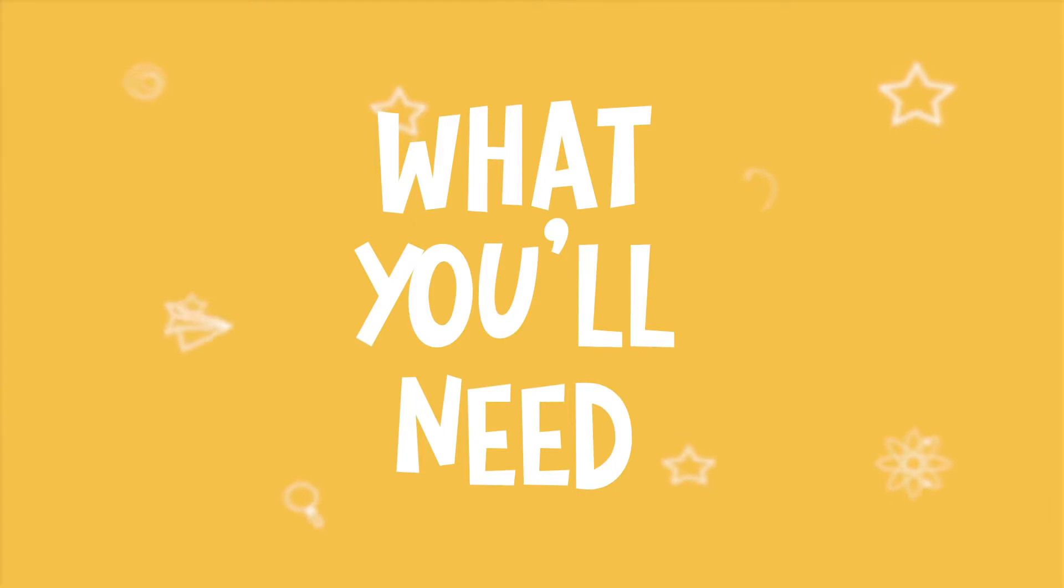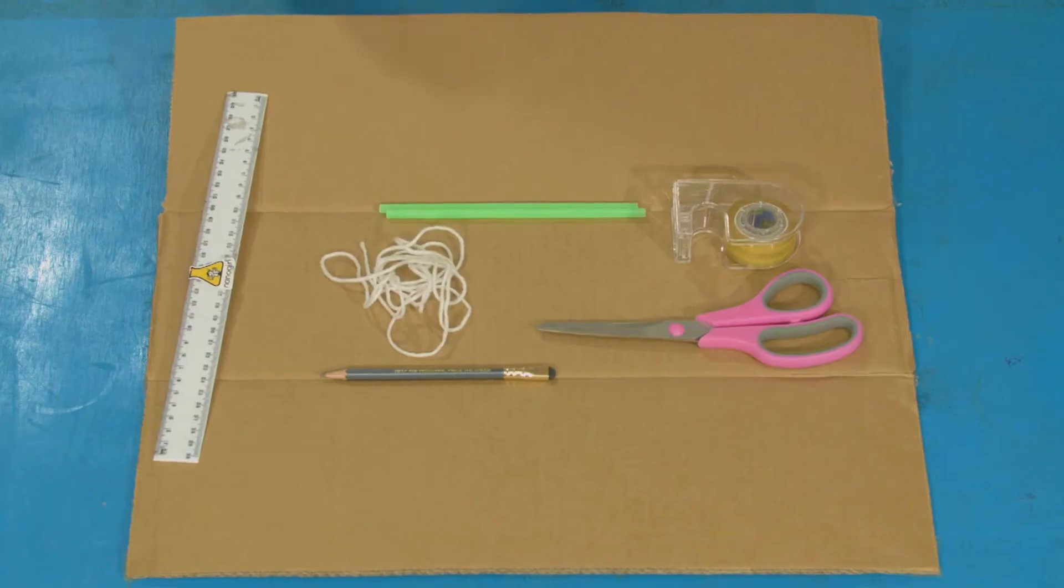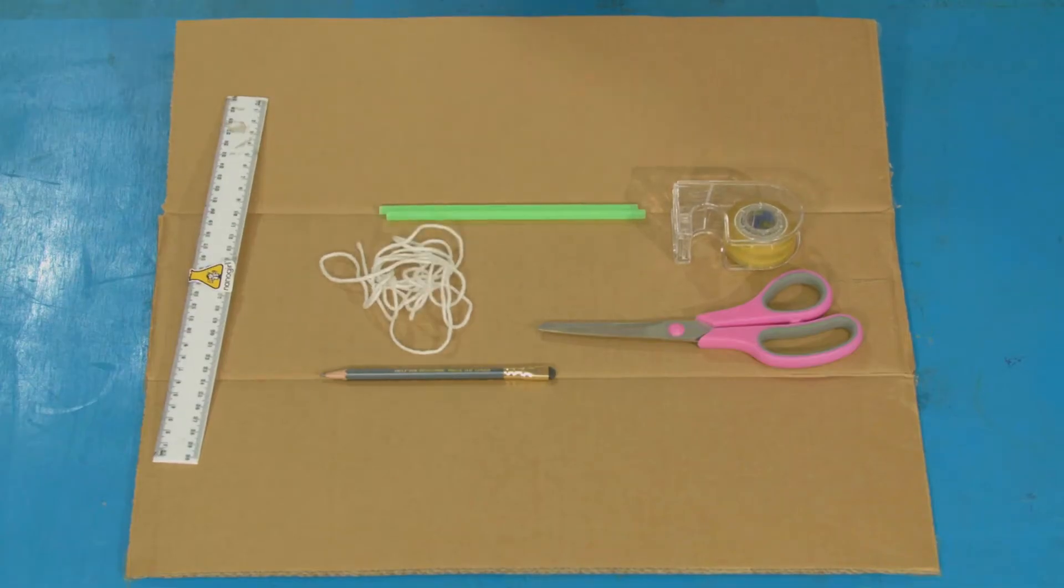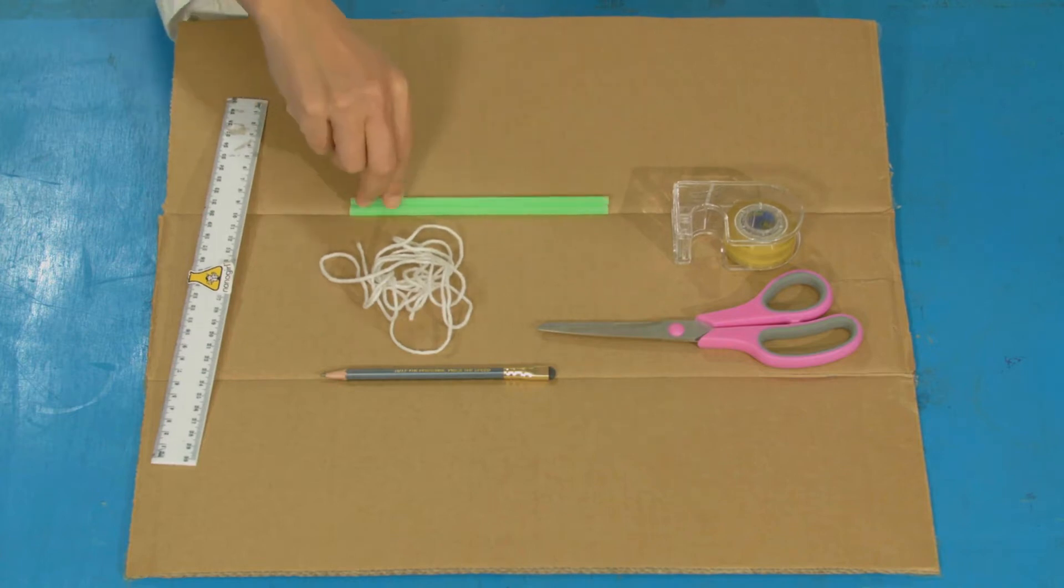For this experiment, you are going to need thick cardboard, string, scissors, tape, pencil, some paper rolled into straws or some plastic straws, and a ruler.